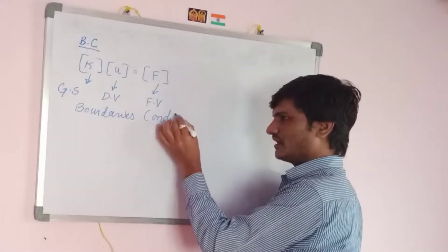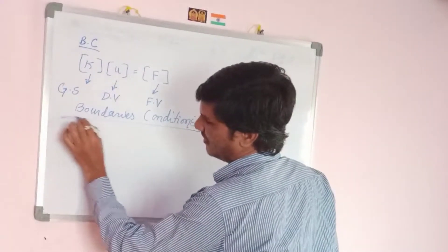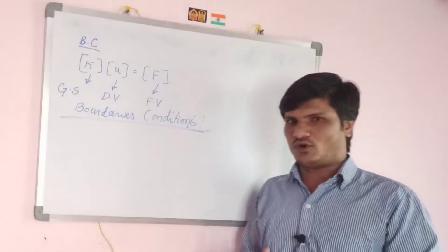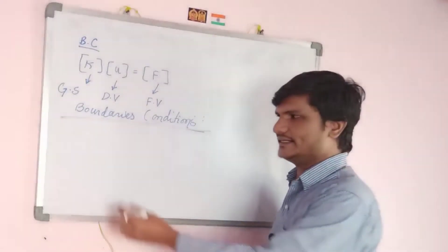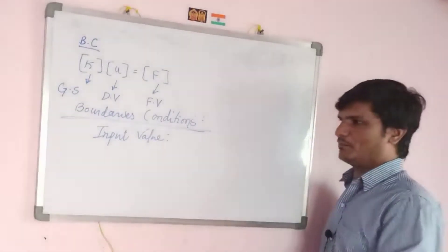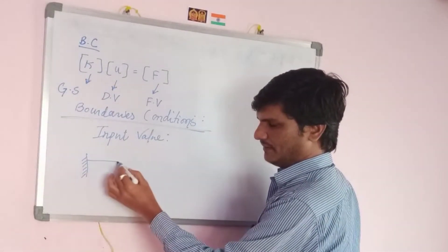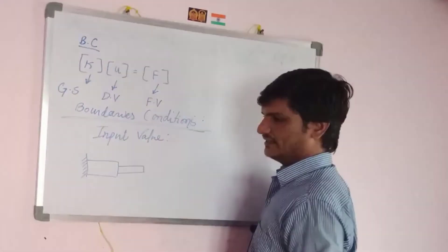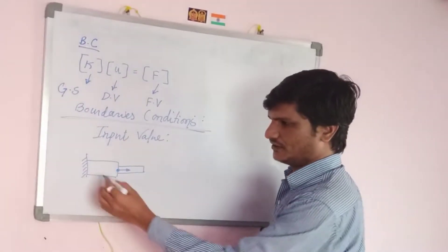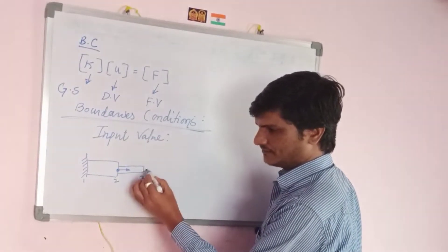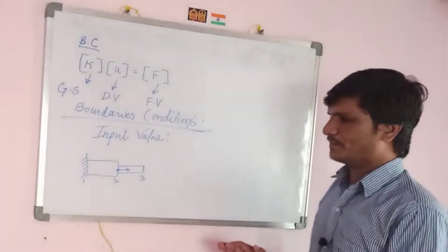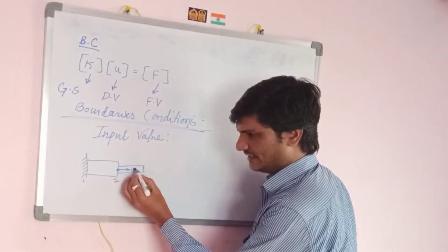How do you identify the boundary conditions? Based on the geometry and case studies, you apply the boundary conditions. A boundary condition is essentially an input value. Let me take a bar element — a stepped bar — and apply a node at the middle where the cross-section changes. I will denote the nodes as 1, 2, and 3.